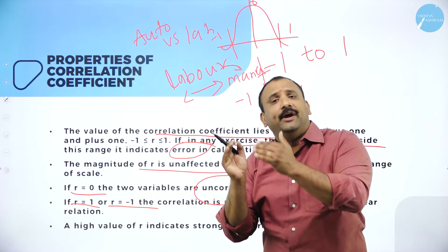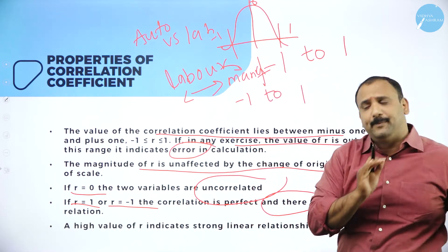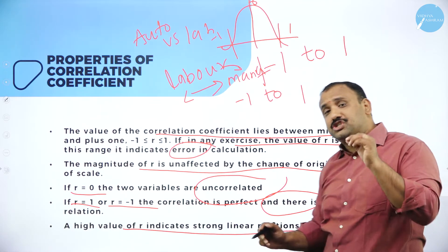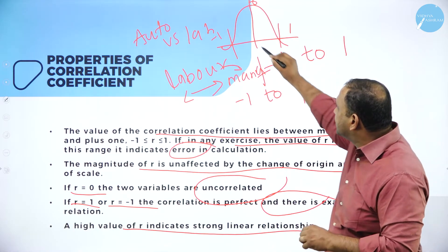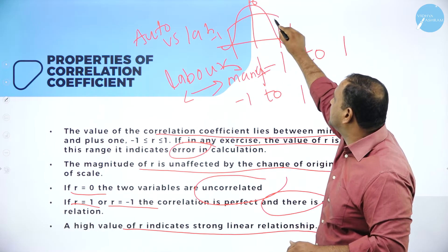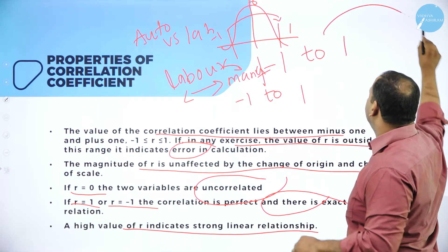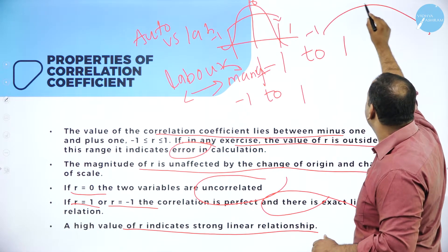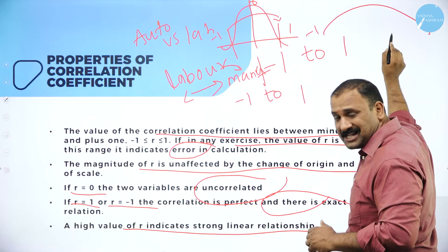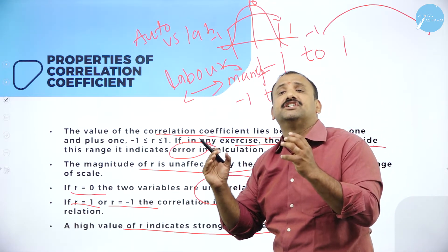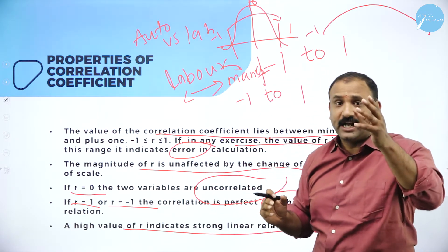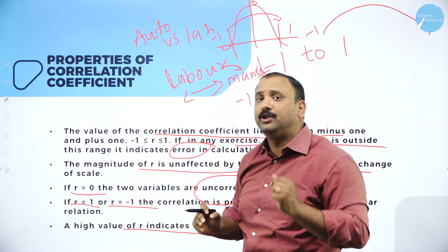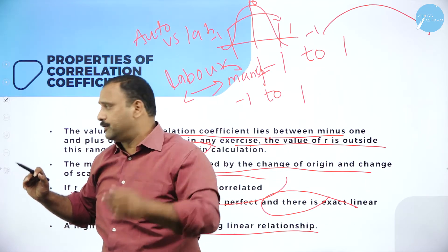A high value of r indicates a stronger linear relationship. As you move from minus one towards plus one, the linear relationship gets stronger. That is a very important part we need to learn here in the coefficient of correlation.